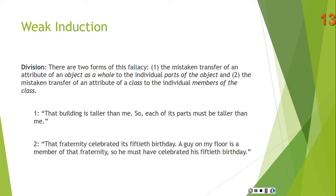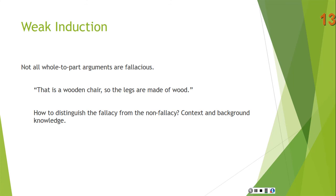Here's an example of the second sort of mistake, transferring an attribute of a class to individual members: 'That fraternity celebrated its 50th birthday. A guy on my floor is a member of that fraternity, so he must have celebrated his 50th birthday as well.' Obviously an error. But not all whole-to-part arguments are fallacious — 'That is a wooden chair, so the legs are made of wood' can be valid. Context and background knowledge will help you distinguish the fallacy from the non-fallacy.